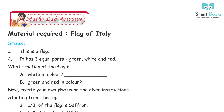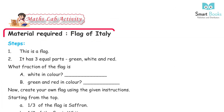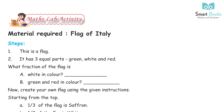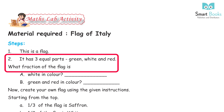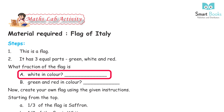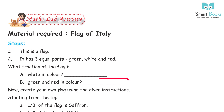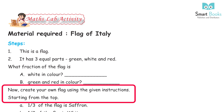Math Slab Activity. Material required: Flag of Italy. Steps: This is a flag. It has three equal parts — green, white, and red. What fraction of the flag is A) white in color, and B) green and red in color?